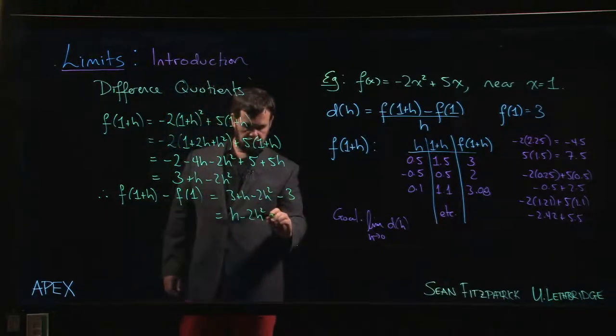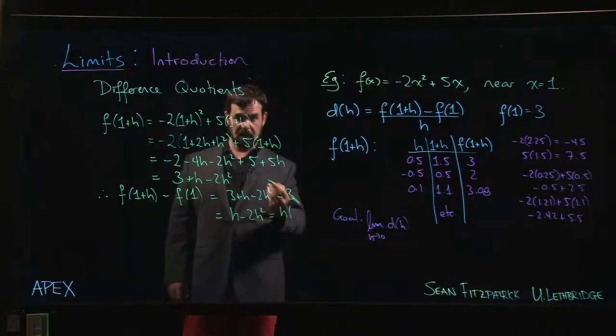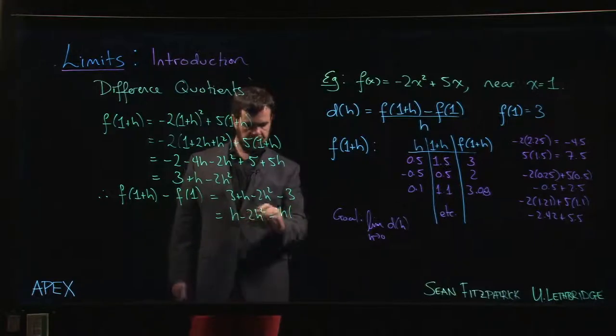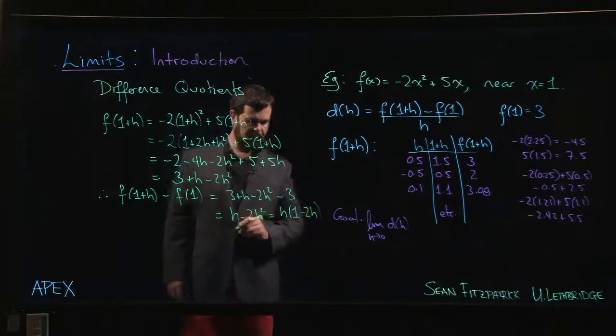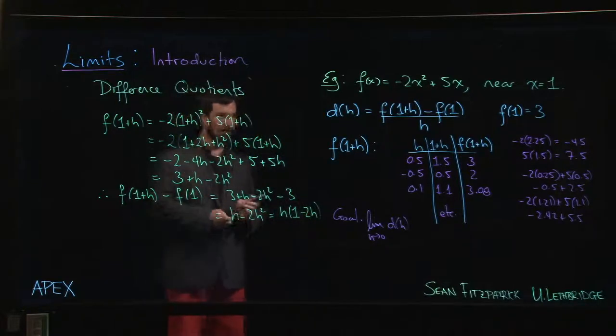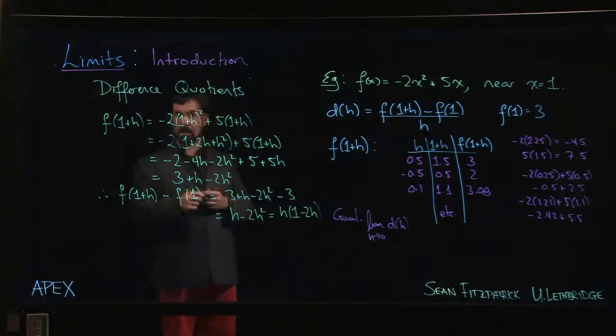Now, we can go one step further. Since everything in here includes a multiple of H, we can take out a common factor. We can write this as H times 1 minus 2H. So why do we want to do that?